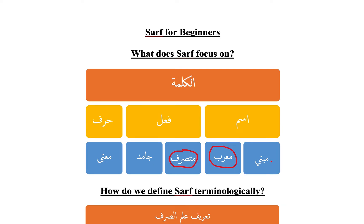What is meant by al-fi'l al-mutasarrif? It is the fi'l that can be conjugated into different structures and forms. For example, darab — I can conjugate that to bring out the present form yadrib, and the imperative form idrib. I can also bring out the ism fa'il, which is the noun denoting the person who did the action — for example, daribun — or the noun denoting the person upon whom the action was done — the ism maf'ul — madroobun, wa il-akhirihi. So ilm al-sarf focuses on al-fi'l al-mutasarrif and al-ism al-mu'rab.